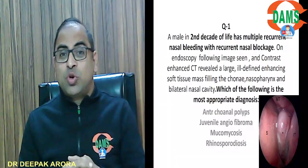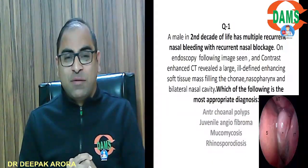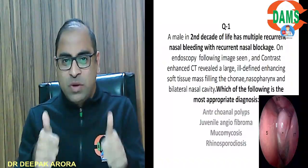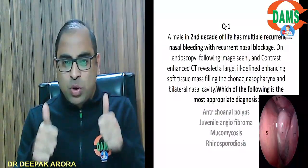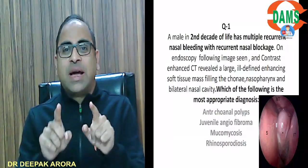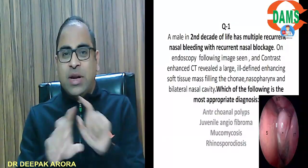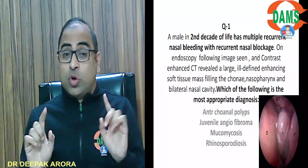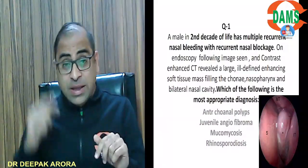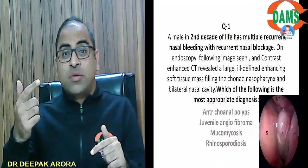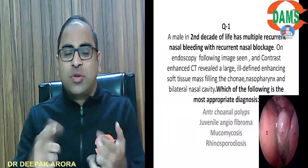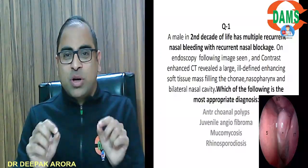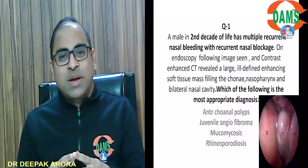Now one option is mucormycosis. If you have revised the notes properly, which word will help you rule out this diagnosis? Diabetes. Diabetes is not there in the MCQ, so I will not go for mucormycosis. And if mucormycosis is the answer, what could be the other possibility? They can ask you the drug of choice or the important findings of mucormycosis.